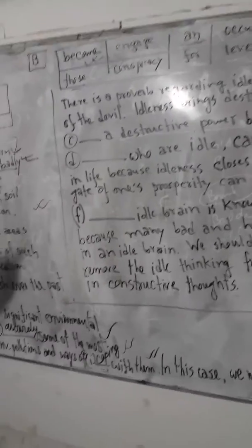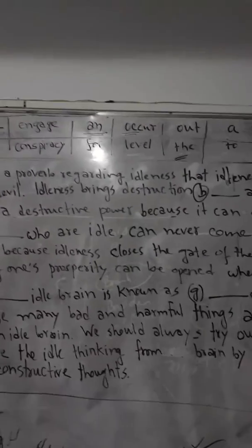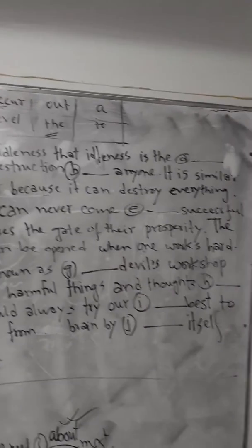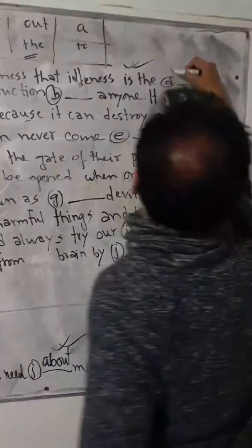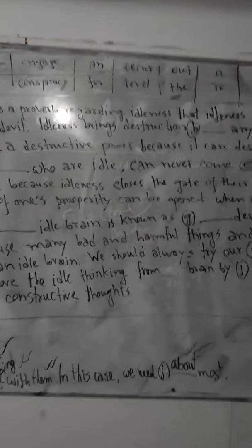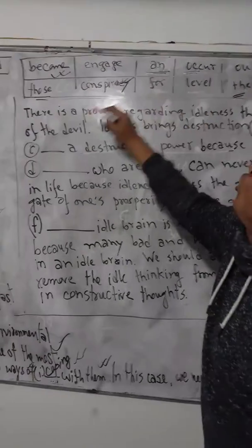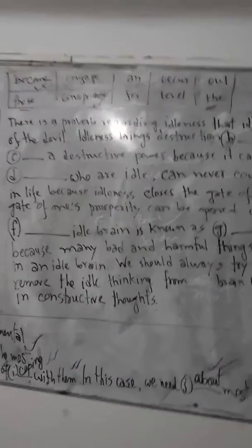Now: 'There is a proverb regarding idleness — idleness is the dash of the devil.' The verb 'is' takes an object, and an object should be a noun. Looking at our word list, the only noun here is 'conspiracy.' So it will be placed here: 'Idleness is the conspiracy of the devil.' Well done!